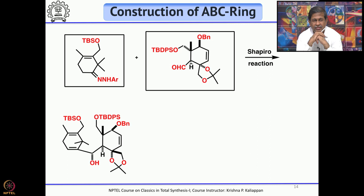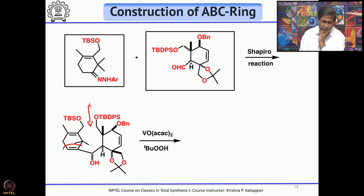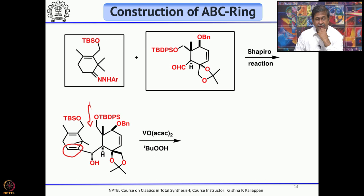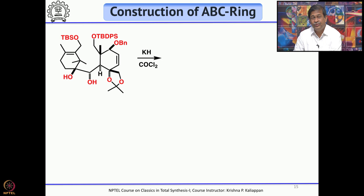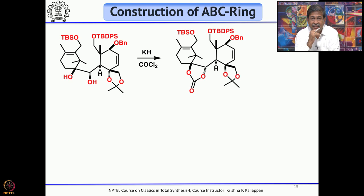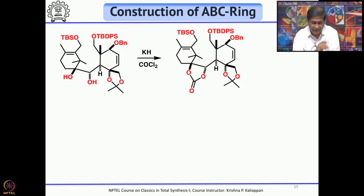Now you can see everything is in place: the A ring is there, the C ring is there, and all the carbon atoms for the B ring are present — only you have to connect these two carbon atoms. Before that, you have to convert this double bond into a hydroxyl group. Epoxidation of the double bond, achieved with palladium(II) acetylacetonate in the presence of tert-butyl hydroperoxide, gives the epoxide. Then treatment with LiAlH₄ or DIBAL gives the 1,2-diol, which is protected as a cyclic carbonate.